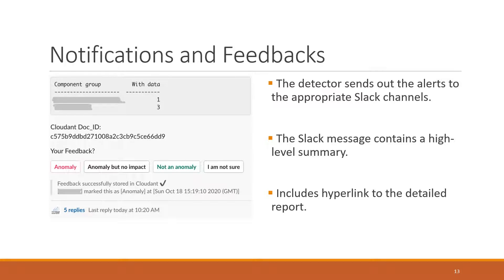The detector sends out alerts to the appropriate DevOps stream using Slack channels. The Slack message contains a high-level summary of the alert and the count of anomalous features grouped by platform component groups. It also includes a hyperlink to the detailed report. We have included a mechanism for direct feedback from the DevOps teams for reported anomalies in the Slack channel.